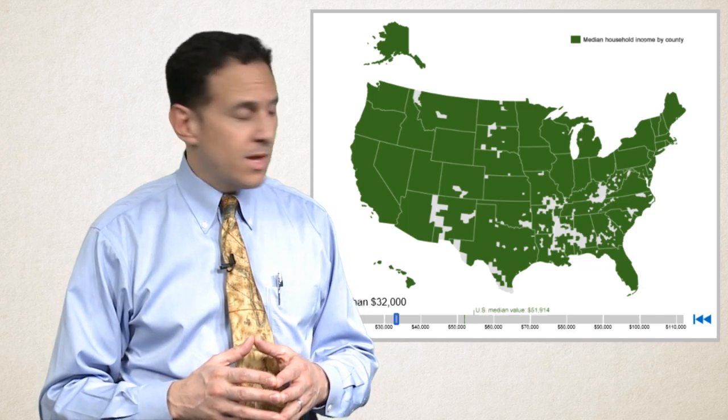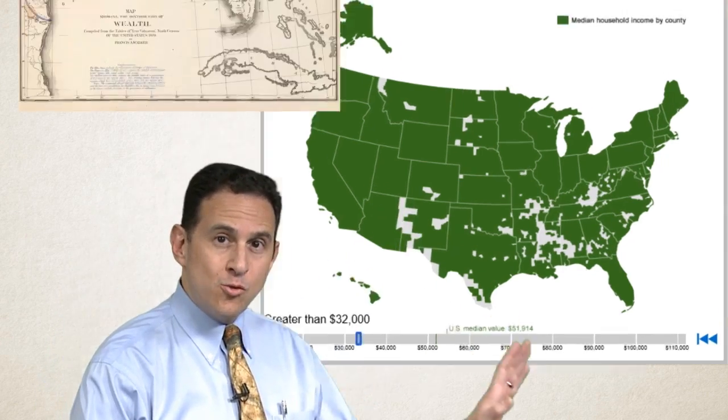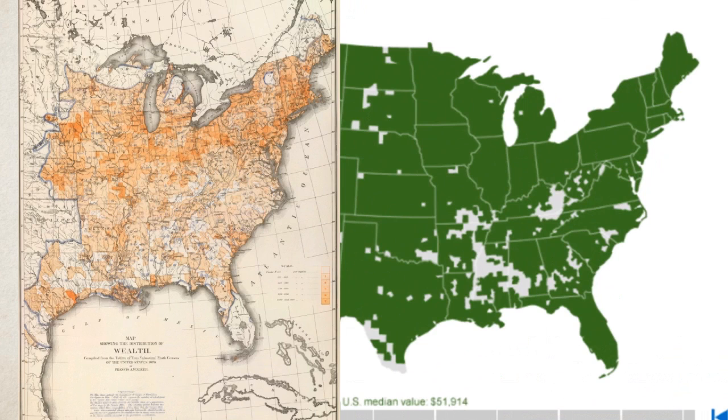Looking at these two maps side by side, is there anyone who could argue against the importance of history? And that's what's really in the federal statistical system — it is nothing less than the history of the United States in numbers at the neighborhood level. That's what's there and that's what I'm hoping we can deliver in the coming weeks and months.